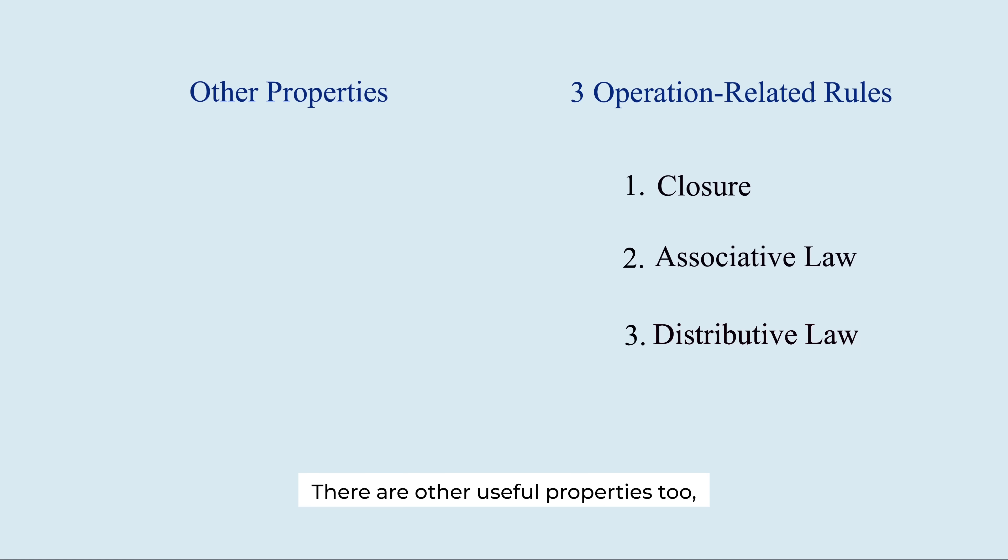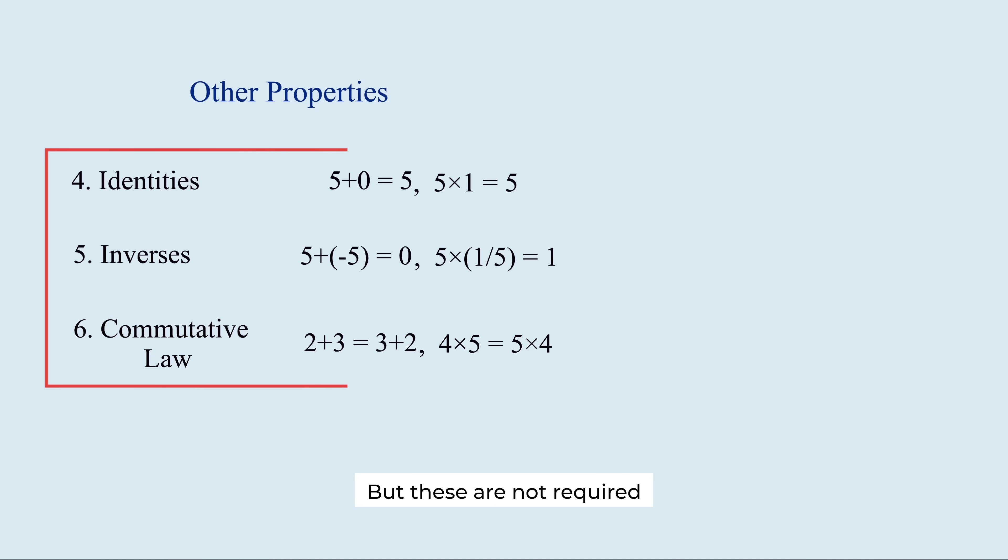There are other useful properties too. Identities, inverses, the commutative law. But these are not required for a system to qualify as a number system. Quaternions and octonions break the commutative law of multiplication. But they are still accepted as legitimate number systems.